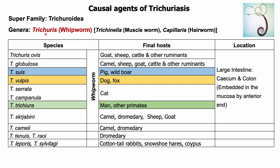Parasites under the genus Trichuris are known as whipworm due to their whip-like appearance. Trichuris ovis infects various ruminant hosts such as goat, sheep, and cattle. Trichuris suis is important for pigs. Trichuris vulpis commonly infects dogs. Trichuris serrata infects cats. Camels can be infected with different species such as Trichuris globulosa, Trichuris skrjabini, Trichuris cameli, etc. All these parasites are located in the large intestine, particularly in the cecum and colon. The disease caused by Trichuris species is known as trichuriasis or whipworm infection.